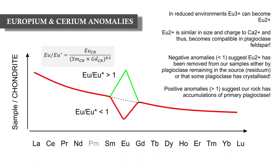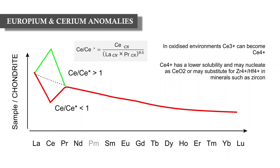Another exception is cerium anomalies, which operate similarly to europium anomalies. In oxidized environments, trivalent cerium can become tetravalent Ce⁴⁺, which has much lower solubility and may nucleate as cerium dioxide, or substitute in minerals in place of Zr⁴⁺ or Hf⁴⁺ in minerals such as zircon. Cerium anomalies can be measured in rocks and minerals such as zircon, calculated as chondrite-normalized Ce divided by (chondrite-normalized La × Pr)^0.5, using lanthanum and praseodymium as the adjacent elements.